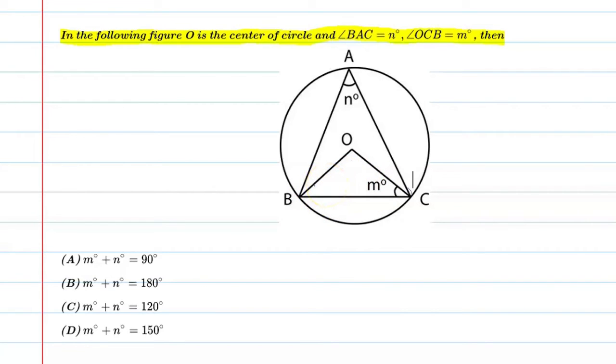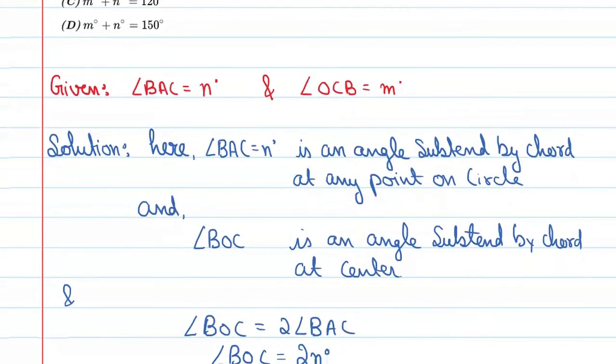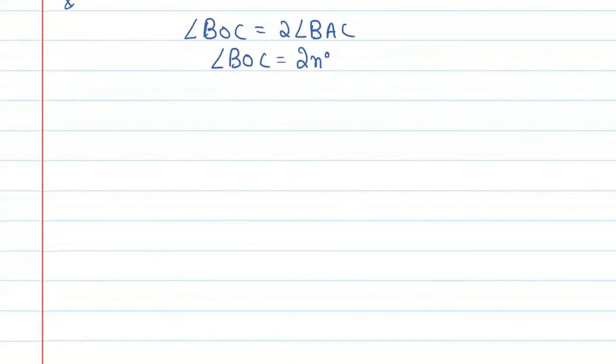Let's see what condition we have. In triangle BOC, angle B plus angle O plus angle C is equal to 180 degrees by angle sum property.